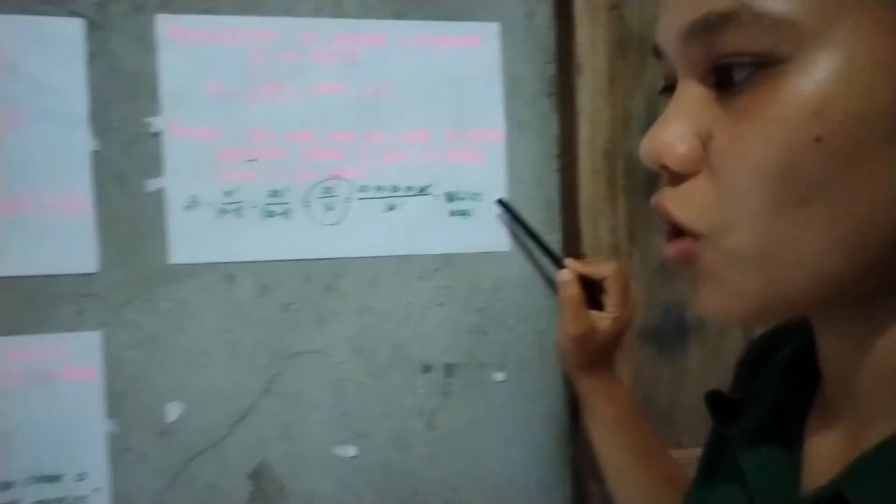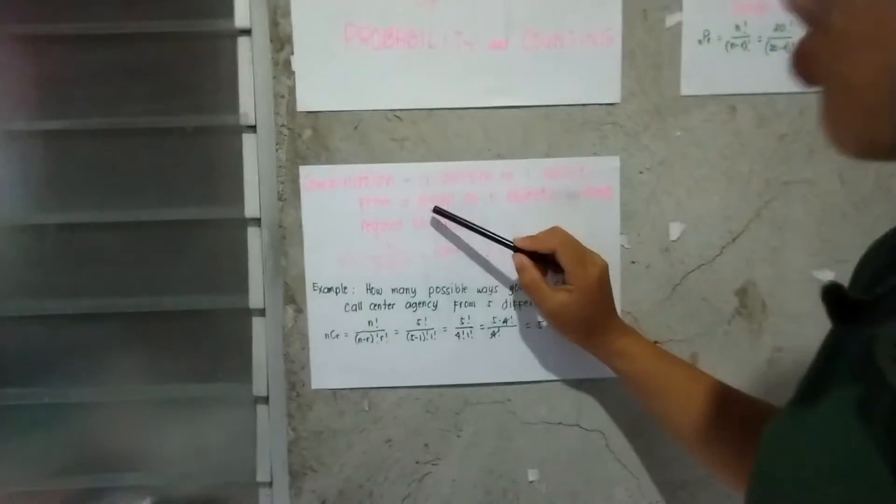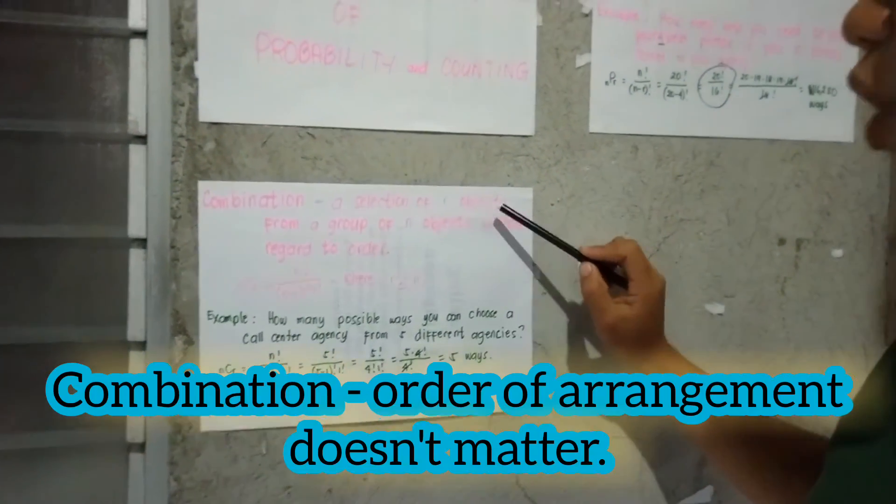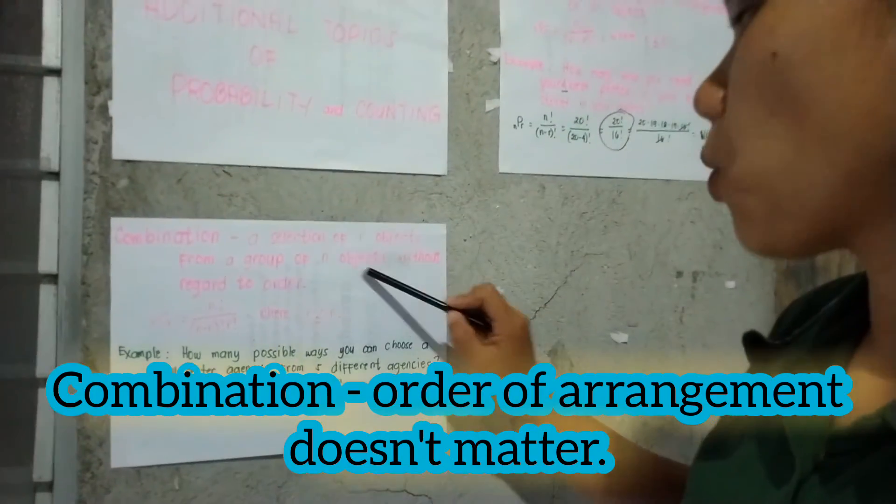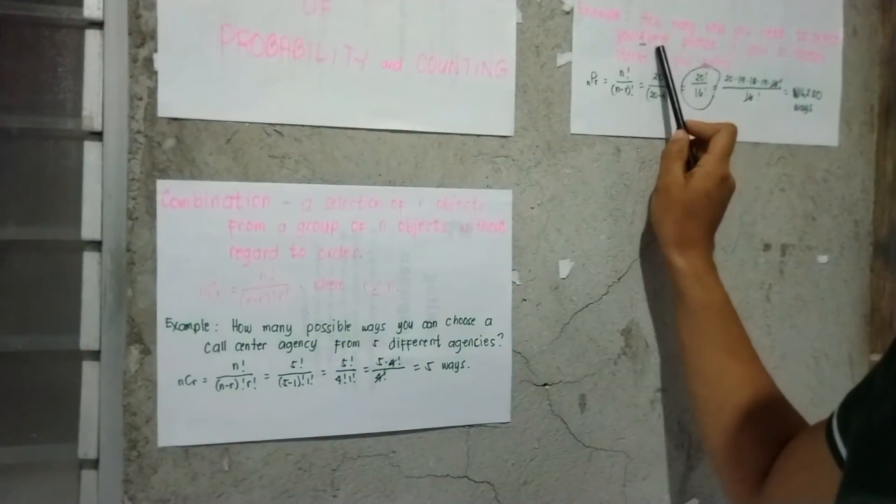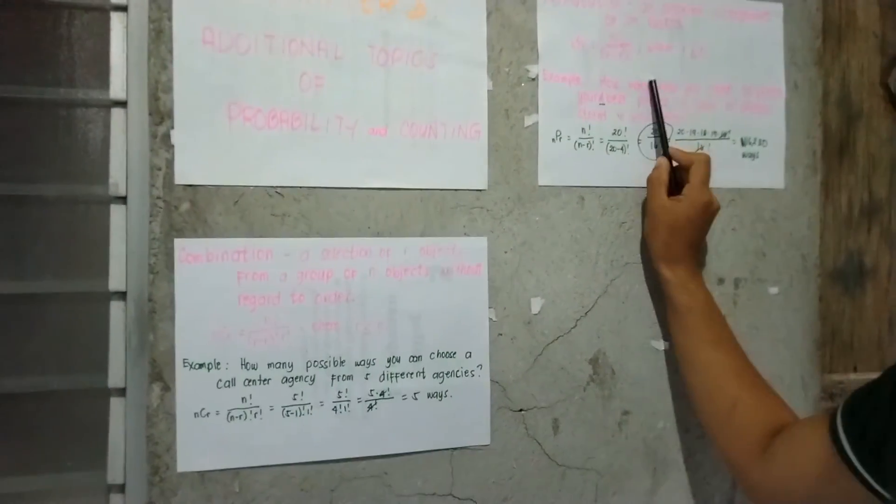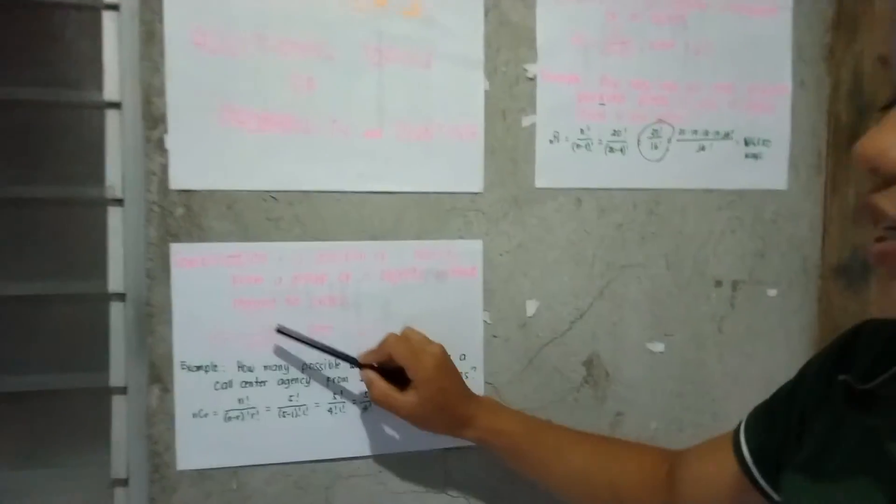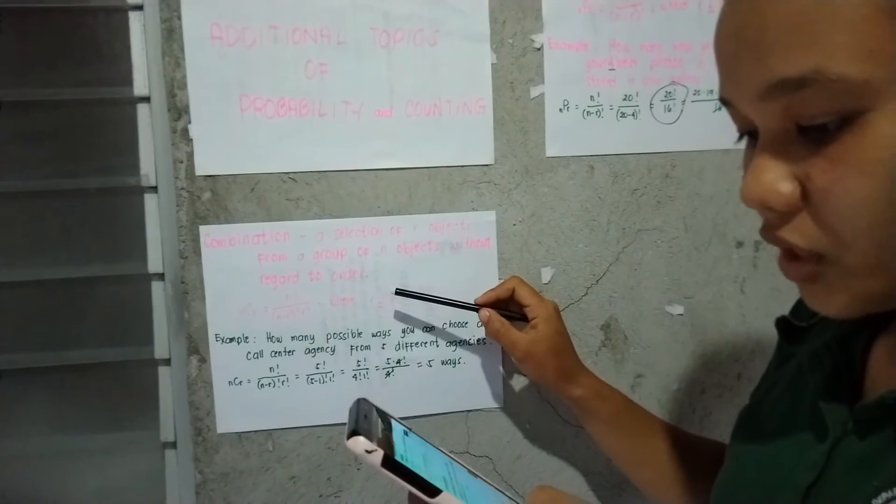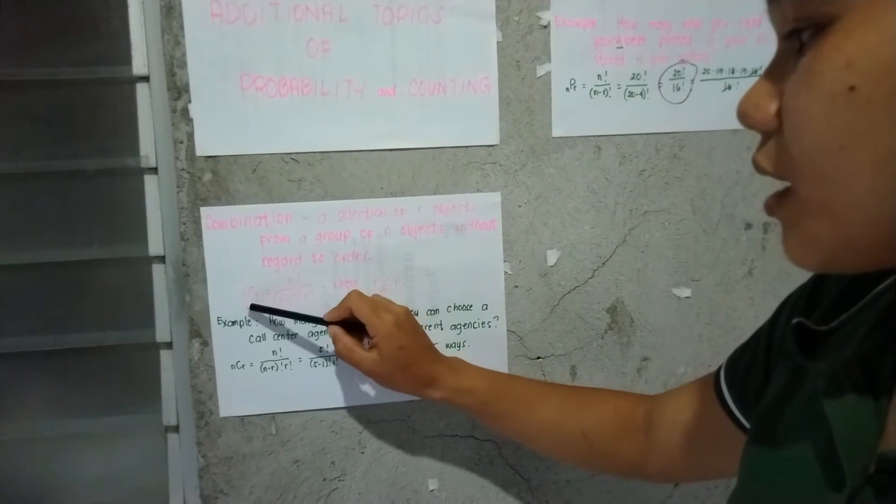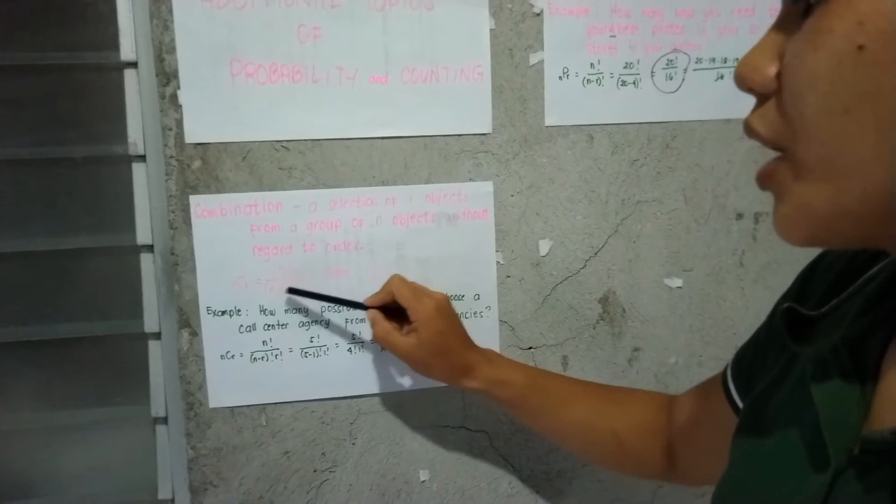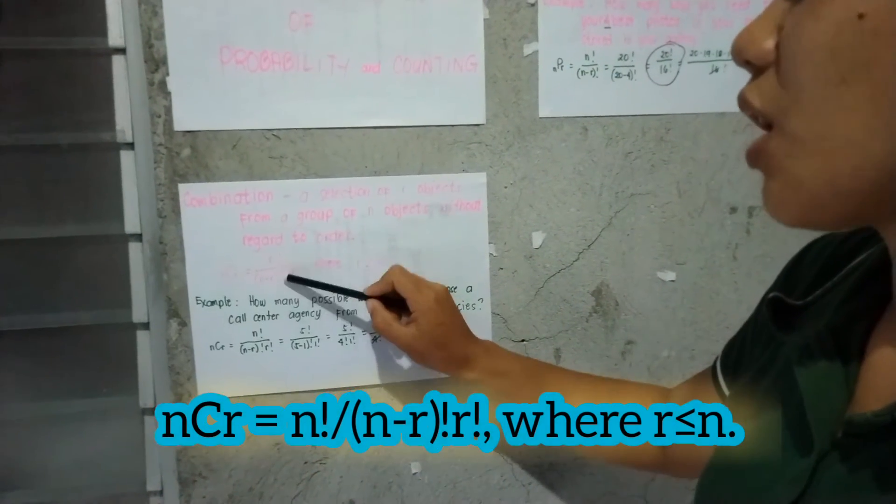Now we'll move to combination. A combination is a selection of r objects from a group of n objects without regard to order. Unlike permutation, combination is not concerned with order. This can be written as nCr equals n factorial over [(n minus r) factorial times r factorial], where r is less than or equal to n.